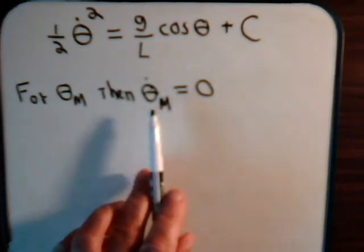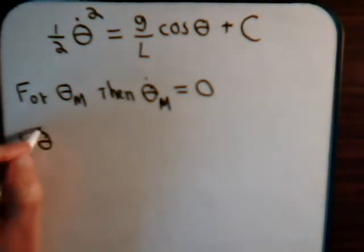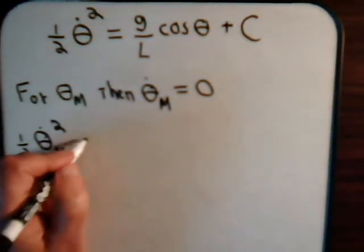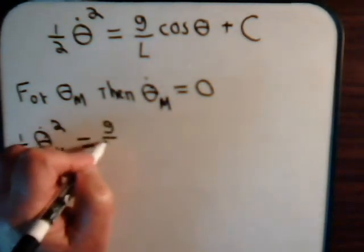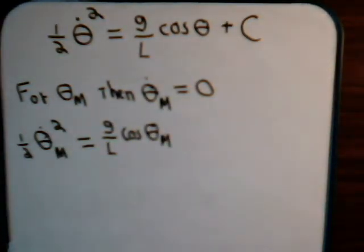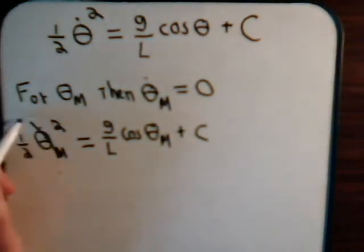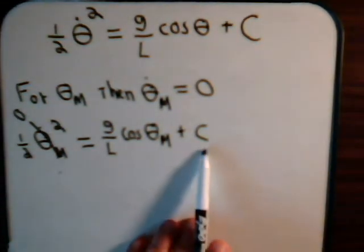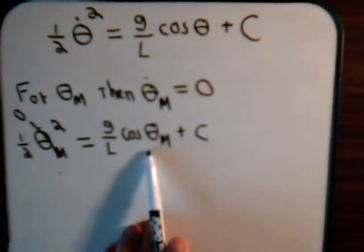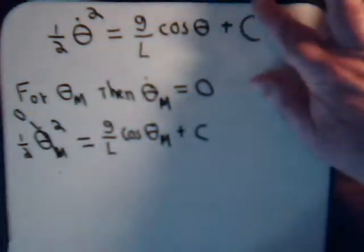So now, putting that into the equation, we would have one-half theta-dot_m squared equals g over l times the cosine of theta maximum plus a constant. And as we said, this is zero. So we see that the constant of integration equals minus g over l times the cosine of theta_m. You can put that back into the equation: this is minus g over l cosine theta_m.